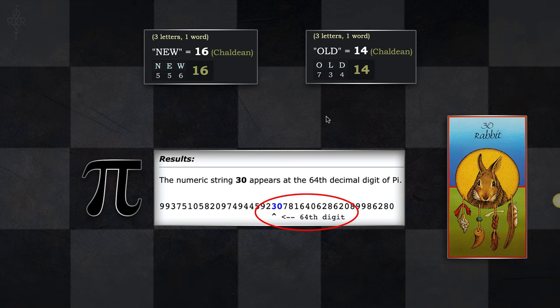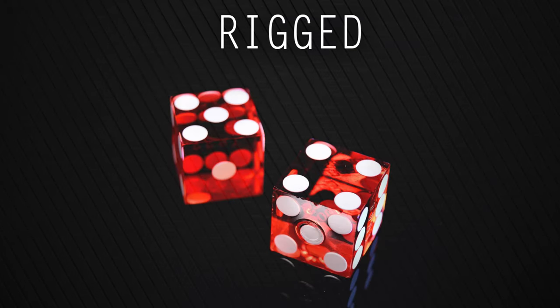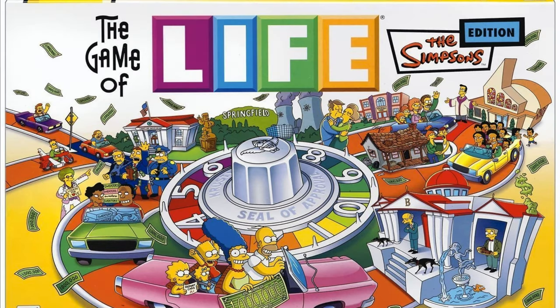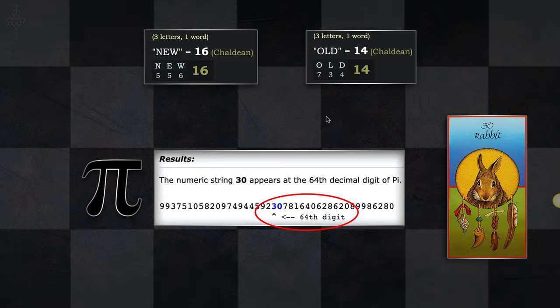The game of life is fixed — it's rigged. I can't prove that, but the numbering outcomes I keep getting show that this software was written long before we got here. You're just playing out your part. Even in the Bible when it says God knows what you need before you even ask Him — well, of course, because the game of life is fixed.